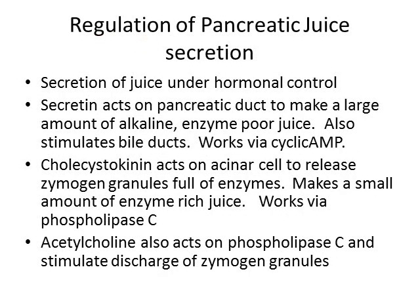Let's talk about the regulation of pancreatic juice. Pancreatic juice secretion is regulated through secretin, cholecystokinin, and acetylcholine. Secretin works on the pancreatic duct cells via cyclic AMP, and cyclic AMP forces those cells to secrete more pancreatic juice. However, the zymogen granules remain largely intact, so you get a large volume of alkaline juice with very few enzymes. Secretin also stimulates bile ducts.